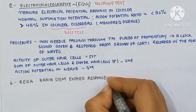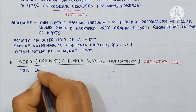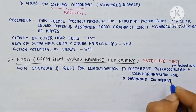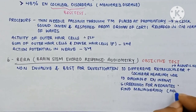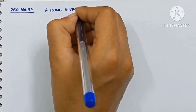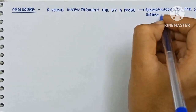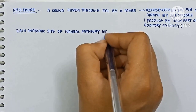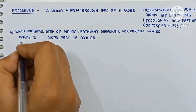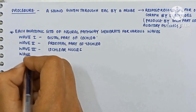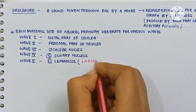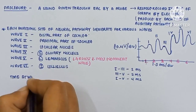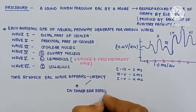Third is BERA — Brainstem Evoked Response Audiometry. It is an objective, non-invasive test used to differentiate retrocochlear from cochlear hearing loss, to diagnose hearing in infants, screen neonates, and detect malingering. A sound is given from the EAC by a probe and the response is recorded as a graph by electrodes. Each anatomical site of the neural pathway generates various waves: Wave I — distal cochlea, Wave II — proximal cochlea, Wave III — cochlear nuclei, Wave IV — superior olivary nucleus, Wave V — lateral lemniscus (largest and most prominent), Wave VI — inferior colliculus. Interpeak intervals: III to V is 2 ms, I to V is 4 ms. Latency is increased in inner ear disorders and acoustic neuroma.